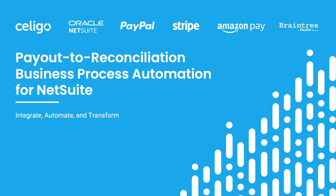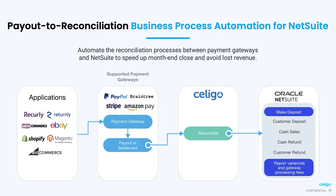Welcome to the introduction of Soligo's new Payout to Reconciliation Business Process Automation for NetSuite. This product automates reconciliation processes between PayPal, Stripe, Amazon Pay, Braintree, and NetSuite, and identifies any payment discrepancies and unsettled amounts, resulting in more streamlined accounting processes.